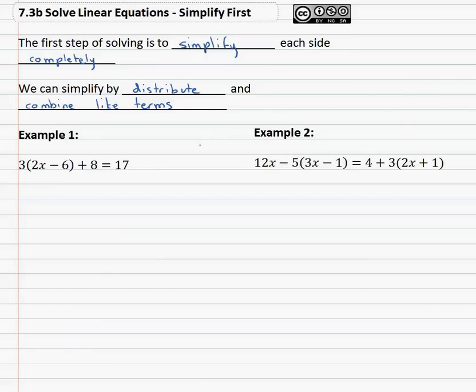So for example, if we were to look at the equation 3 times 2x minus 6 plus 8 equals 17, we want to know what that variable represents, what number goes into that equation for the variable. Well, we'll do that by first balancing on the equal sign and as we do we make sure each side is simplified first.